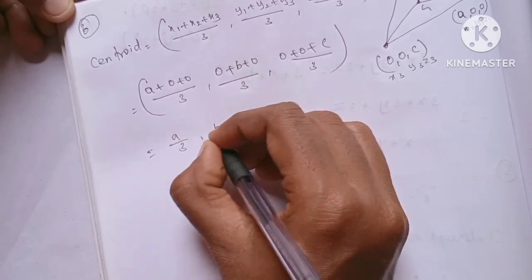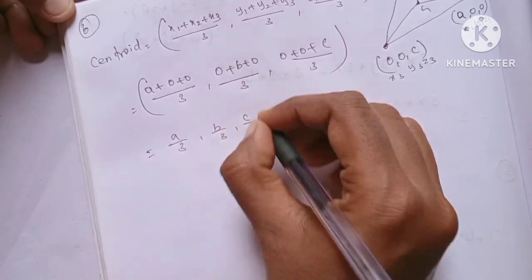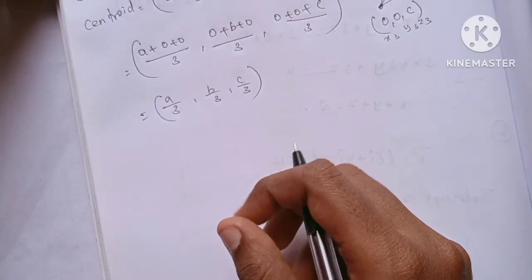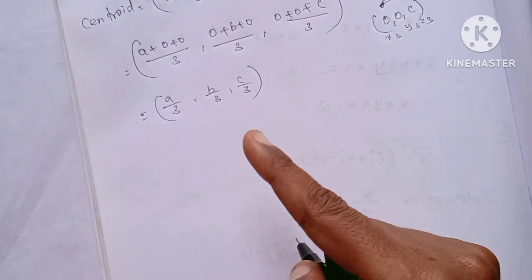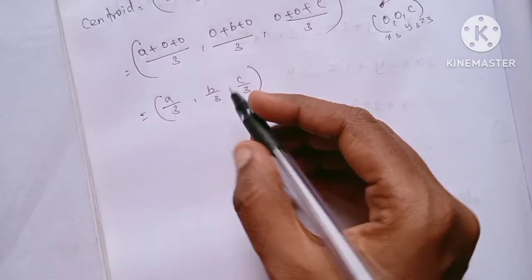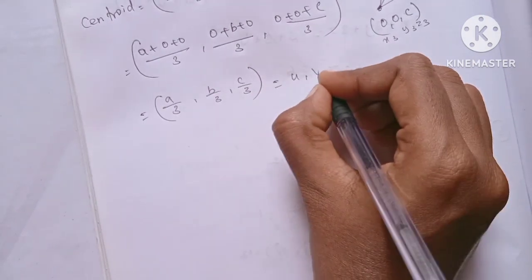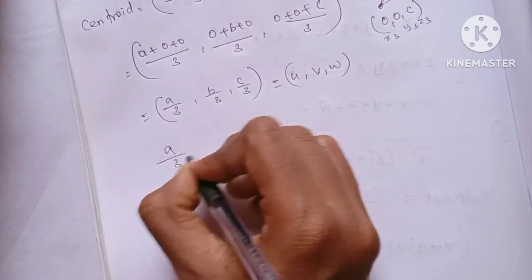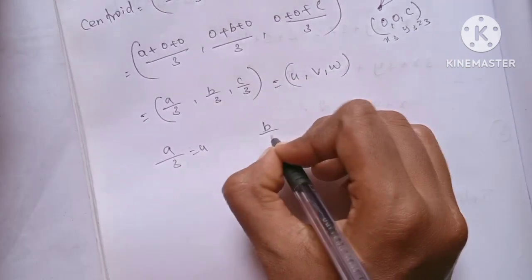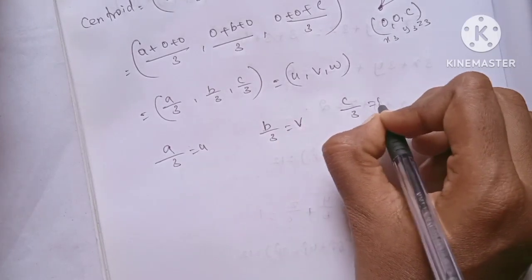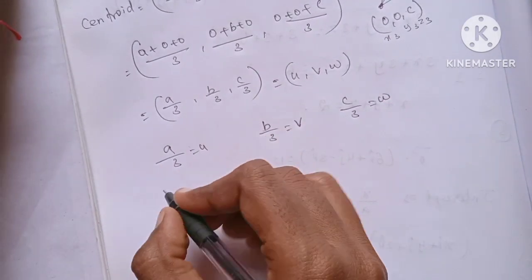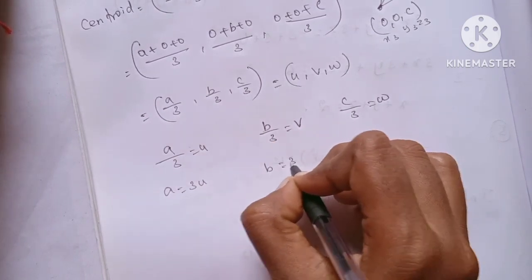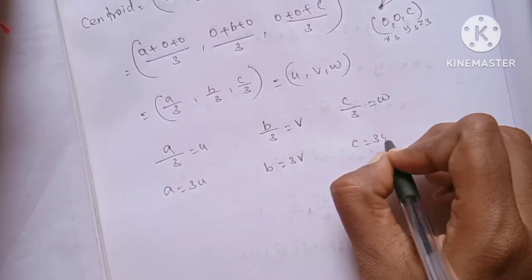Substituting, we get a by 3, b by 3, c by 3. So this is the centroid. Since the centroid is the point U, V, W, we have: u = a/3, v = b/3, w = c/3. Therefore, a = 3u, b = 3v, c = 3w.